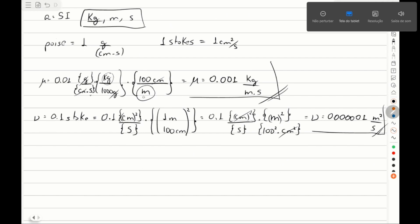The result is that kinematic viscosity in the International System will be 0.00001 meters squared per second. Let's now convert to the British system. Using the same technique we just learned, here we have kilograms per meter per second.